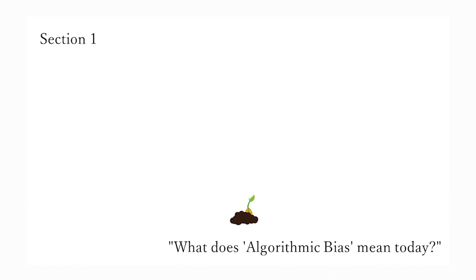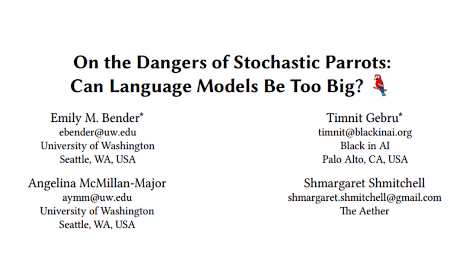What does algorithmic bias mean today? This means social unfairness and inequality produced by AI. Timnit Gebru, a computer scientist and one of the leading researchers in this field, born in Ethiopia, and after studying at Stanford, she has worked on algorithmic bias, especially focusing on race and gender at Google. In 2020, she published a paper which showed the possible errors in a large-scale natural language AI system, the issues of energy consumption for the machine learning caused by the system, and the issues of environmental burdens it possibly brings. Over her publication, she eventually left Google, and it became a scandal. But this is not the main interest of my talk today.